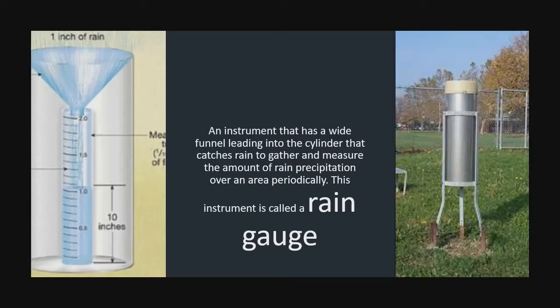An instrument that has a wide funnel leading into a cylinder that catches rain to gather and measure the amount of rain precipitation over an area periodically. This instrument is called a rain gauge.